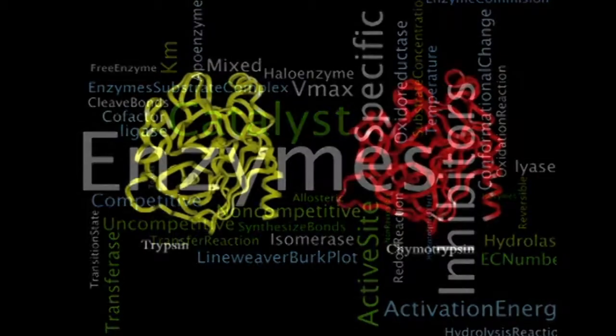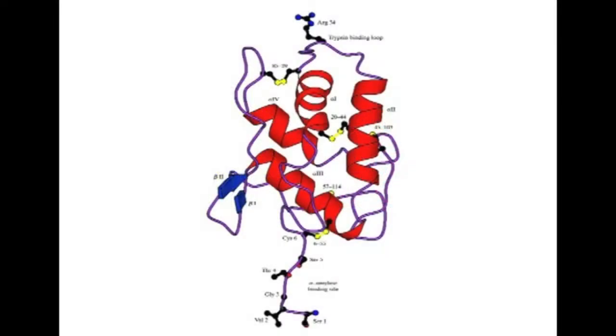Enzyme inhibitors are proteinaceous in nature and are found widely distributed in all pulses and legumes. They interfere with the action of enzymes such as trypsin, chymotrypsin and alpha amylase — thus called trypsin inhibitor, chymotrypsin inhibitor and alpha amylase inhibitors. The digestive products in the gut are not completely digested and absorption is also interfered with, which leads to growth inhibition in individuals. There are certain methods by which we can eliminate these enzyme inhibitors.